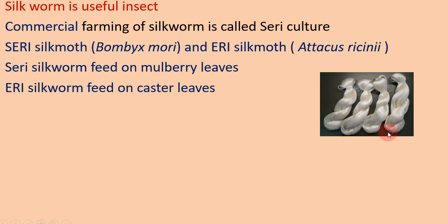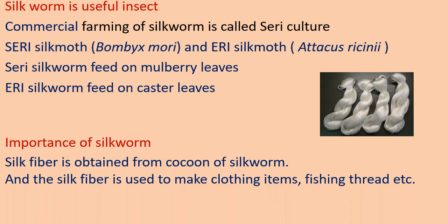This is a silk fiber obtained from silk moth. It is the most important material we use in our daily life. Silk fiber is used in clothing items — various kinds of saris, suitings are made from silk fiber. Silk fibers are durable, attractive, and elastic, and they can be made attractive by adding color. Silk fiber is obtained from the cocoon of silkworm and is also used to make fishing threads.